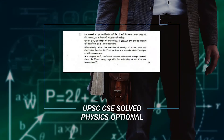Hello everyone. In today's video we will be solving one of the previous question papers of the physics optional. So here's our question. We have to show the variation of density of states and distribution function for a system of particles in a non-relativistic Fermi gas which is at high temperature.